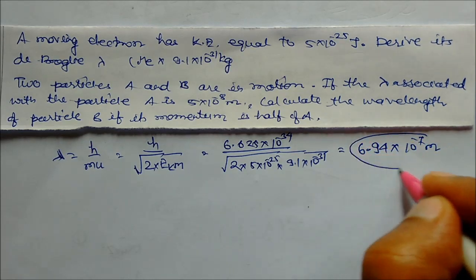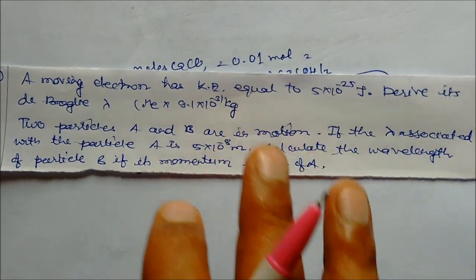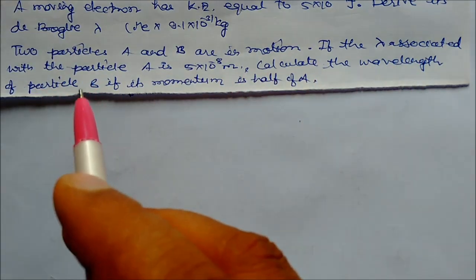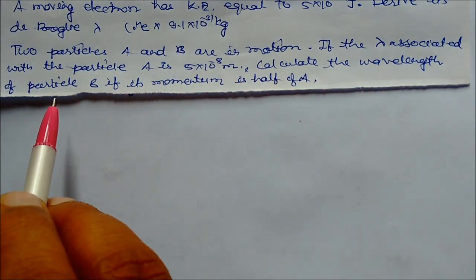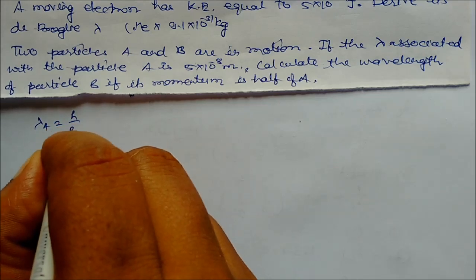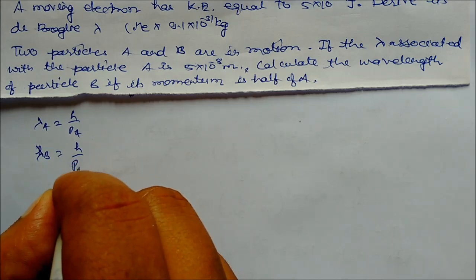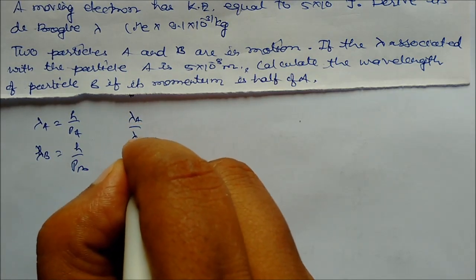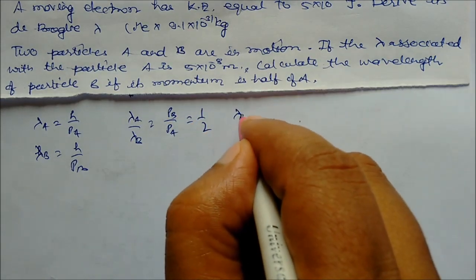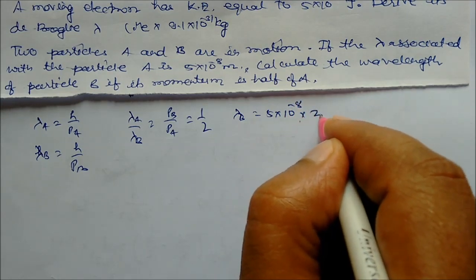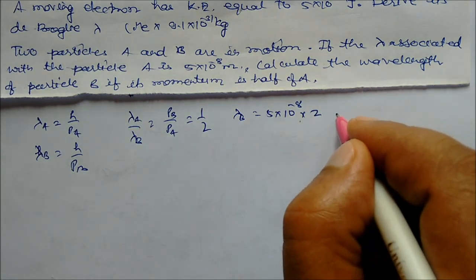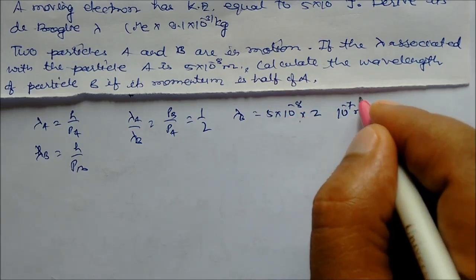For the second problem: two particles A and B are in motion. The wavelength associated with particle A is 5×10⁻⁸ meter. Calculate the wavelength of particle B if its momentum is half of A. Lambda equals h by p, so lambda_A by lambda_B equals p_B by p_A, which is one half. Therefore lambda_B equals 5×10⁻⁸ times 2, giving 10×10⁻⁷ meter.